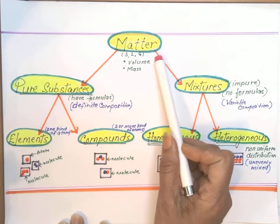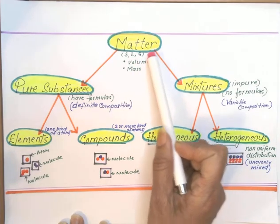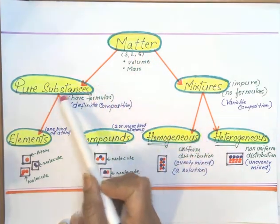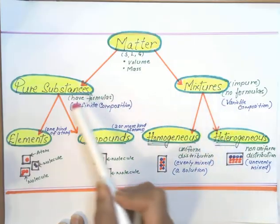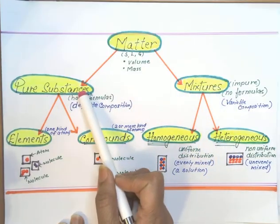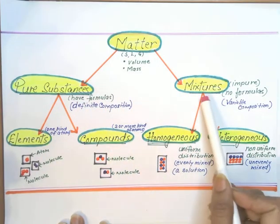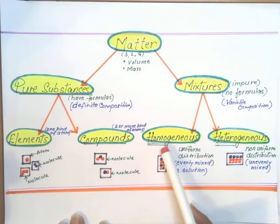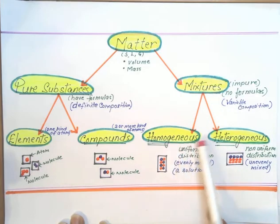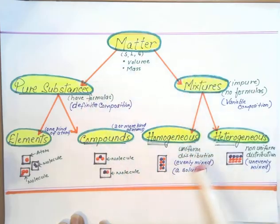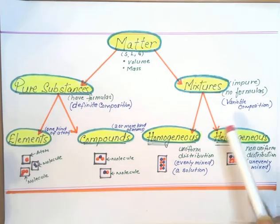This video is on classifying matter. Based on composition, matter can be classified into pure substances and mixtures. Pure substances are of two types: elements and compounds. Mixtures are also of two types: homogeneous and heterogeneous. Let's discuss all this in detail, starting with pure substances.